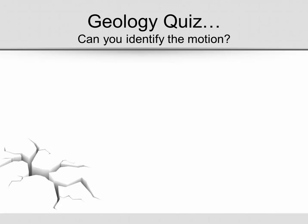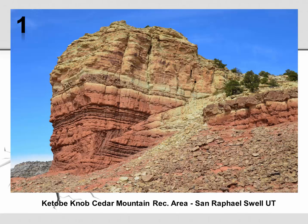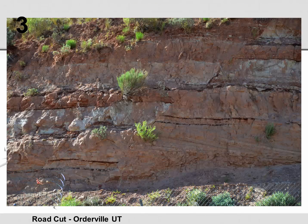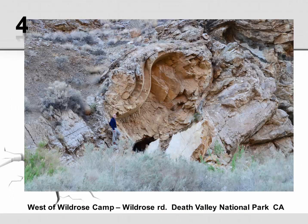So let's take a little quiz. Can you identify the motion in these next five images? Feel free to pause the video between each image. Number one is Kotob Knob, located in the Cedar Mountain Recreation Area in the San Rafael Swell in Utah. Number two is a rock structure found at Noosa Heads in Queensland, Australia. Number three is a road cut near Orderville, Utah.